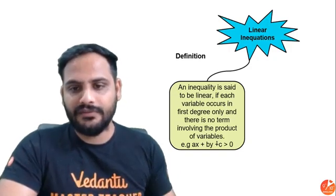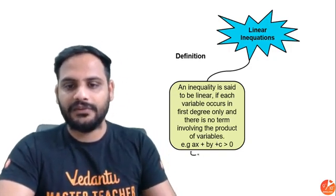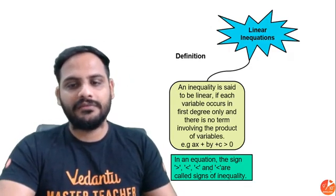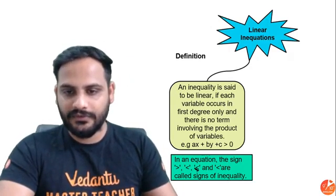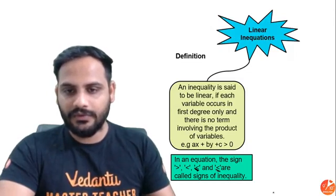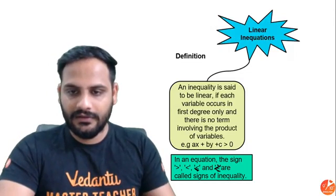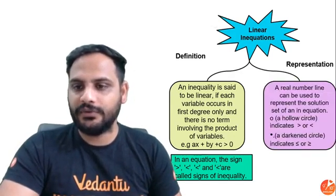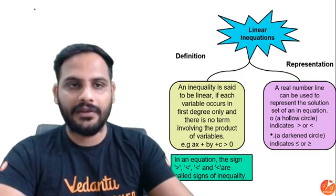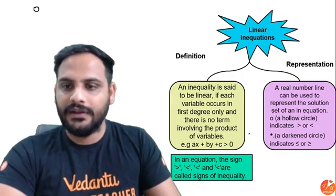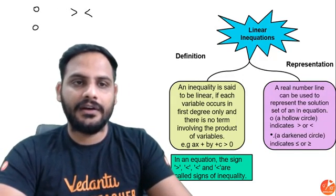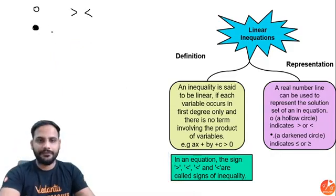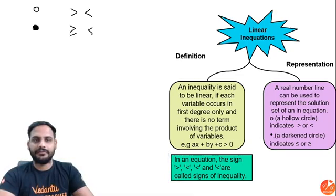In an equation, the signs are greater than, less than, less than equal to, and greater than equal to - these are called the signs of inequalities. A real number line can be used to represent the solution set of an equation. A hollow circle represents either greater than or less than, and a darkened circle represents the equal to signs.